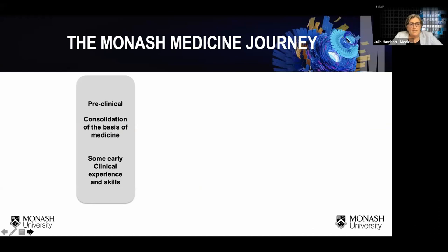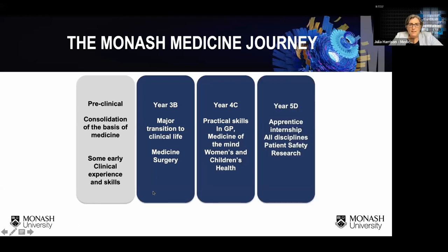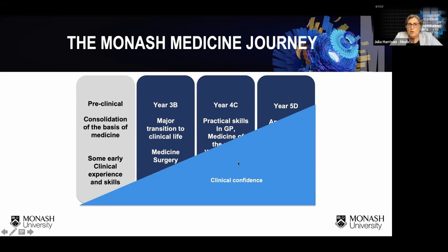In summary: the pre-clinical years are about basic sciences and getting the skills needed to start learning in the hospital. The first clinical year is a big transition year with a lot to get used to, and the final year is all about getting ready for work — students join clinical teams, get involved in patient care, and take on increasing responsibility. Last year, 96% of our students felt prepared or very prepared for work as a doctor, compared to a national average of about 75%.